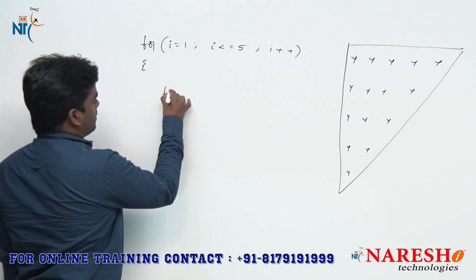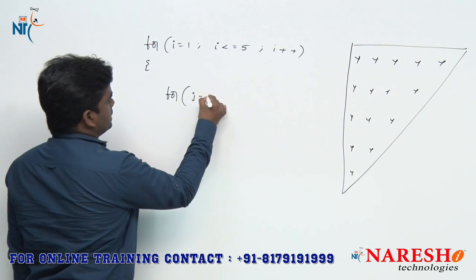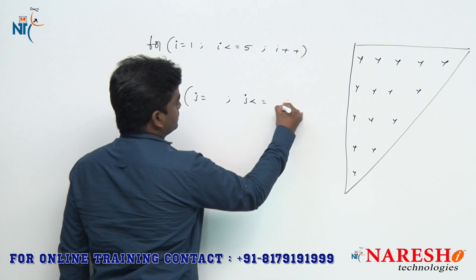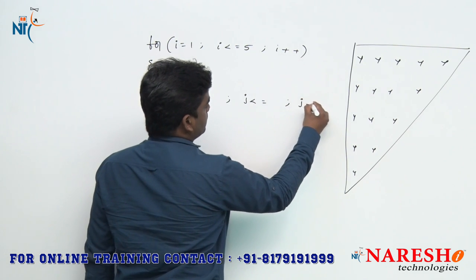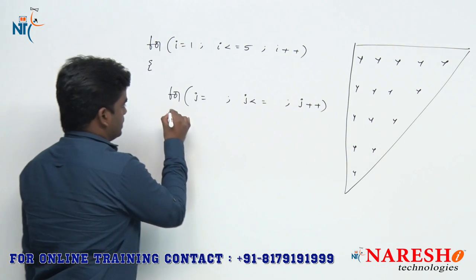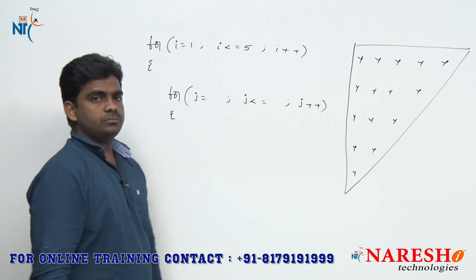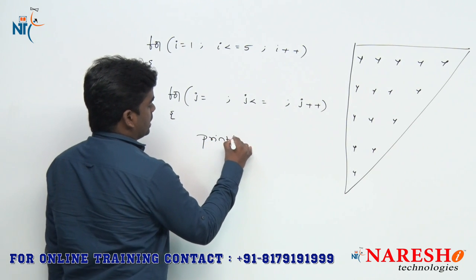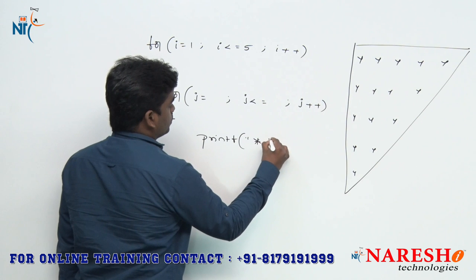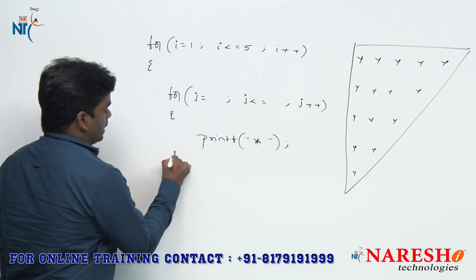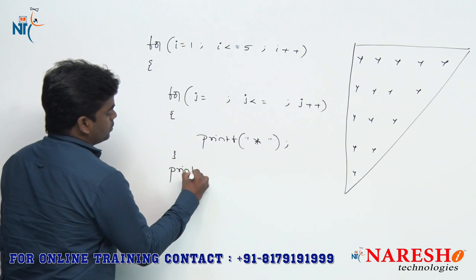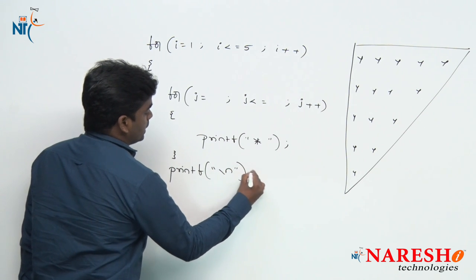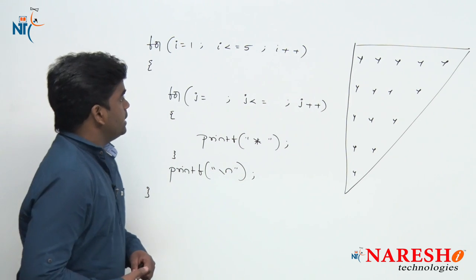And next, inner for loop J value — what is the initialization? What is the condition? The incrementation is ++ only. Inside we are printing printf star — skeleton we already know. After printing one row we need to send the control to the next line, so a newline character we are giving here.